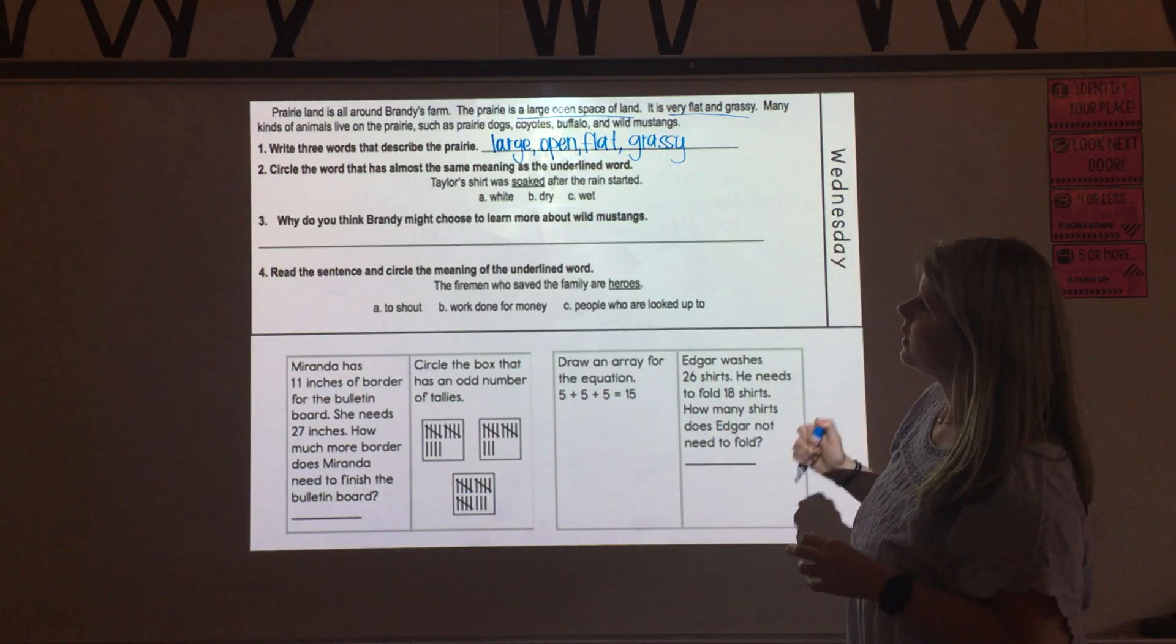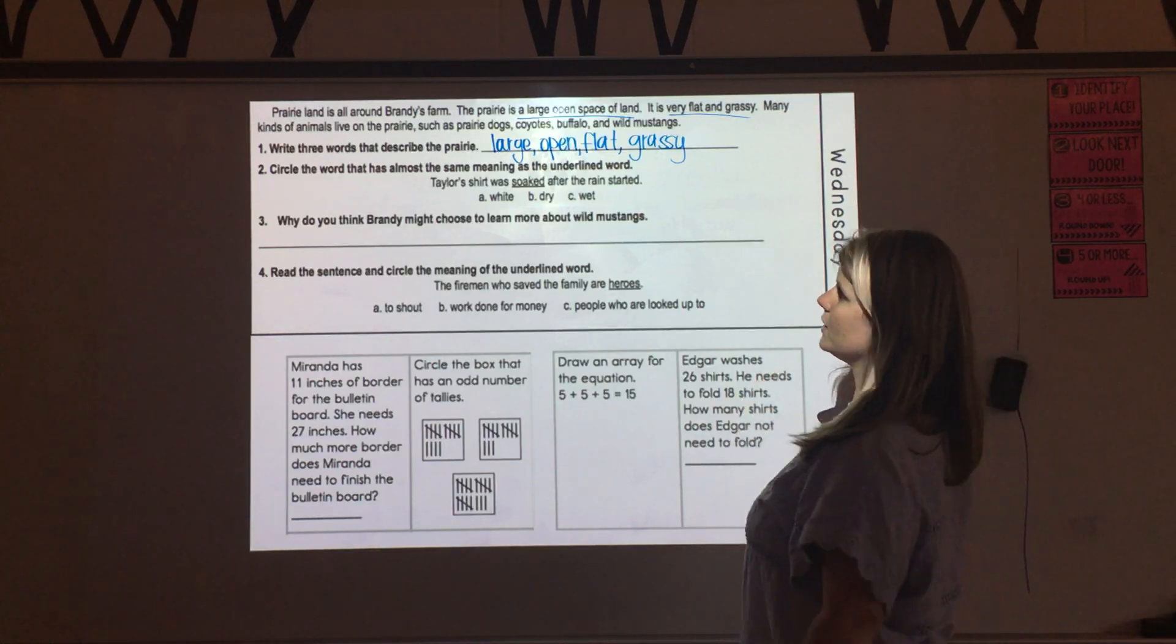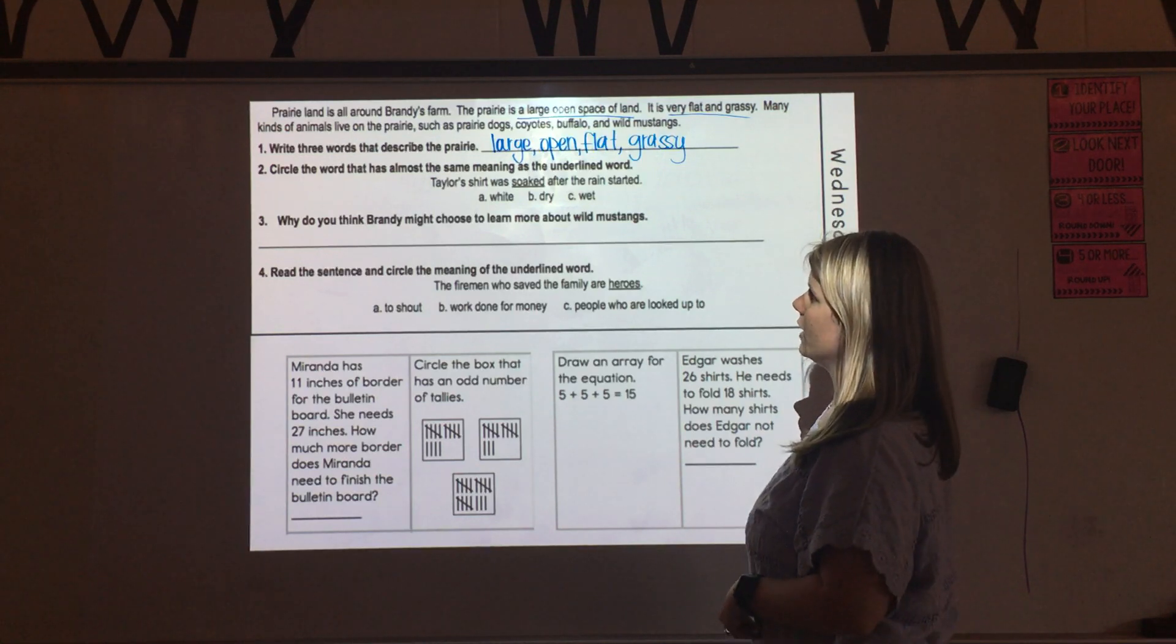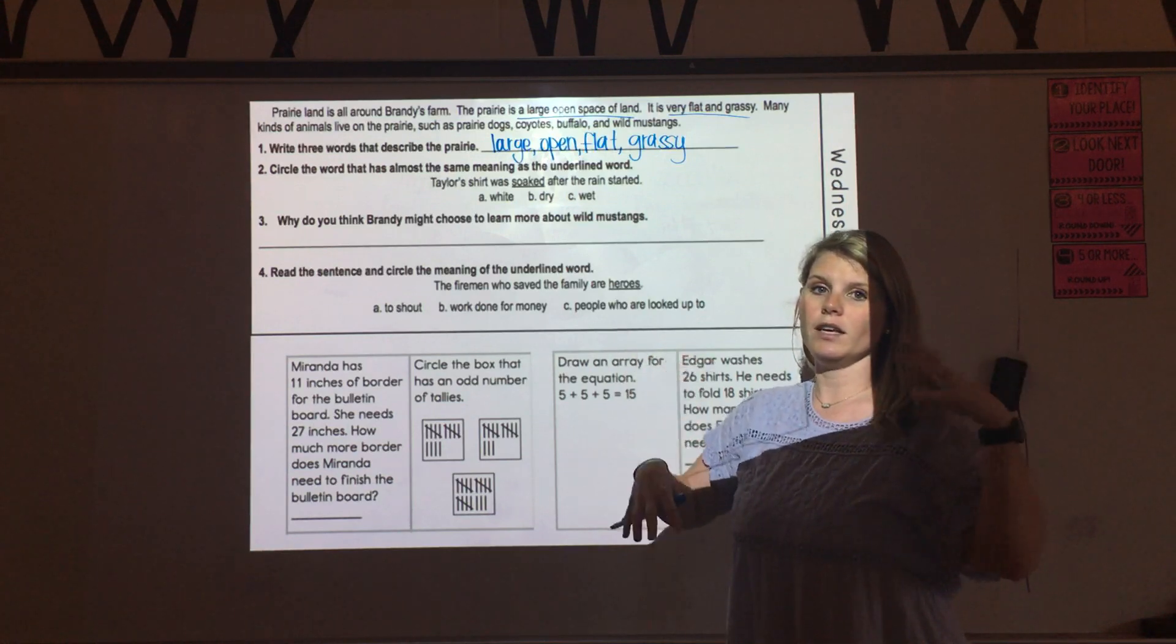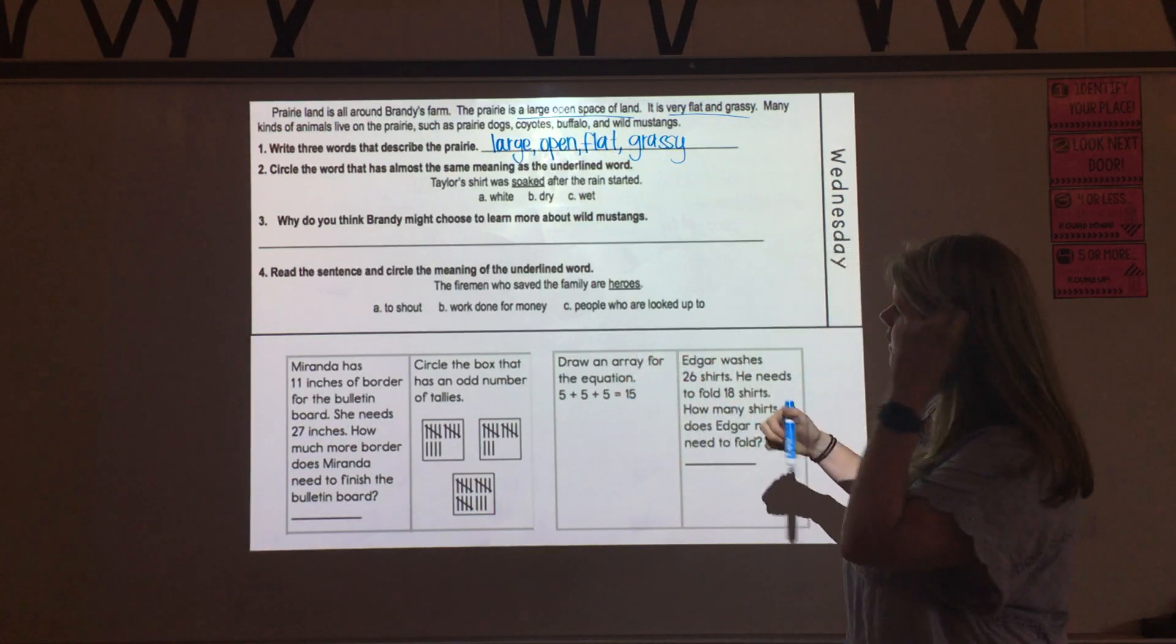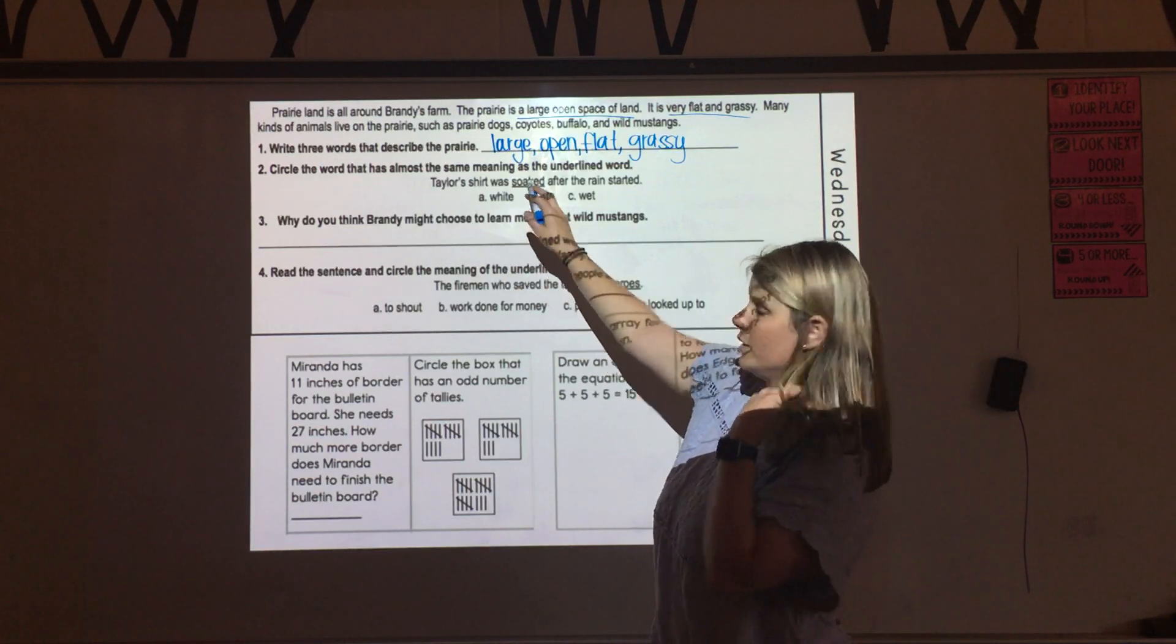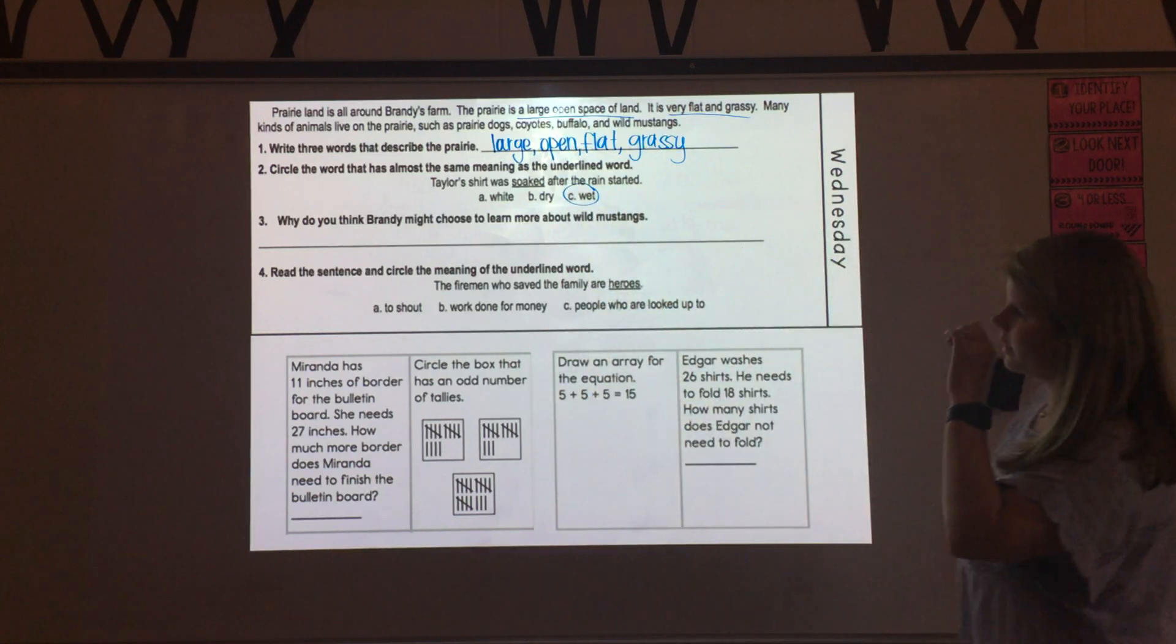Number two is asking us to circle the word that has almost the same meaning as soaked. So it said Taylor's shirt was soaked after the rain started. So we know when the rain comes down, we can infer that rain is water. Water makes our shirts get wet. So her shirt wouldn't necessarily be white because it's soaked, and it definitely wouldn't be dry. So wet is our best answer choice there.